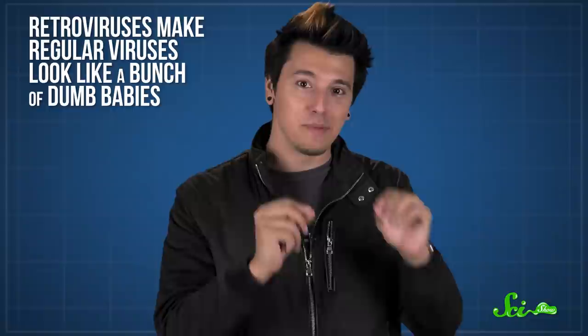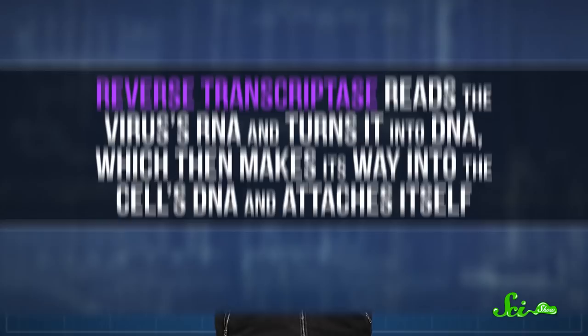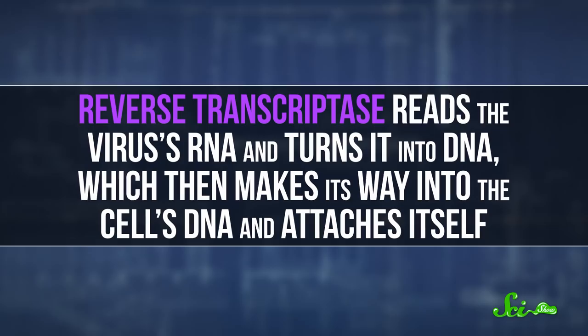But retroviruses make regular viruses look like a bunch of dumb babies. Retroviruses get their supervillain status because of an enzyme called reverse transcriptase. Reverse transcriptase reads the virus's RNA and turns it into DNA, which then makes its way into the cell's DNA and attaches itself.